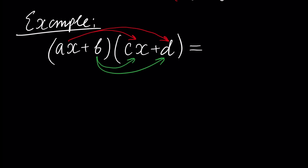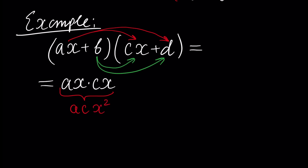Let's perform these multiplications. ax times cx will give us acx squared, and ax times d gives ax times d.